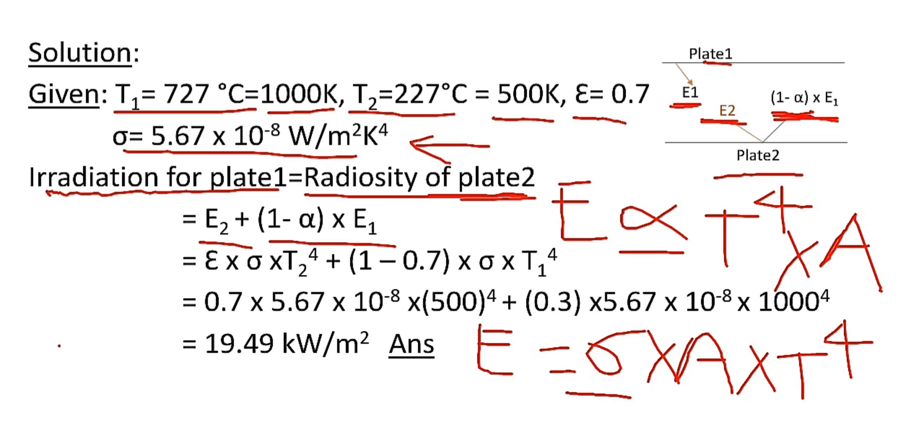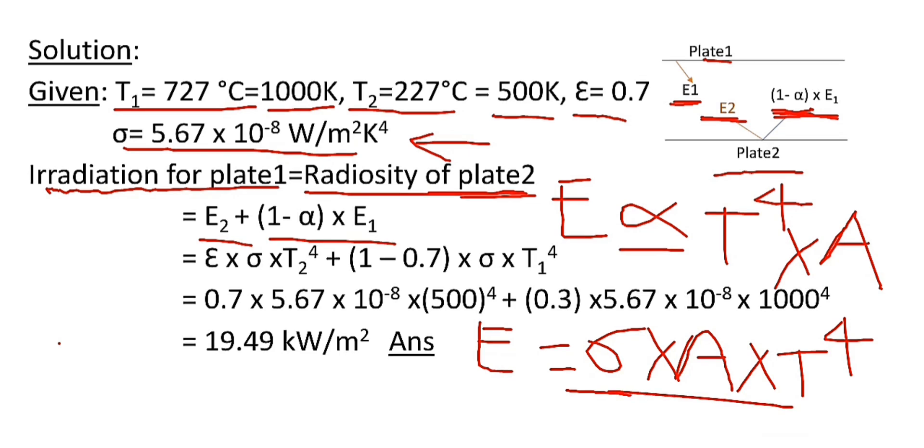According to the question, we have to find irradiation per unit area. So this equation will become σ × T⁴. Since plate 2 is a grey surface, emissive power will be multiplied with emissivity.